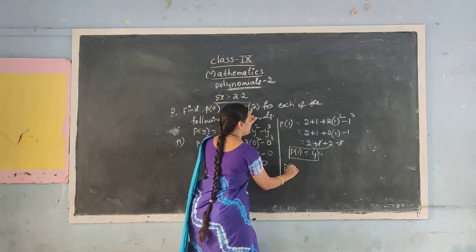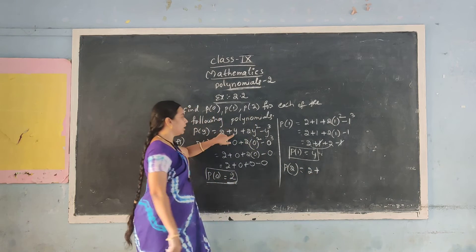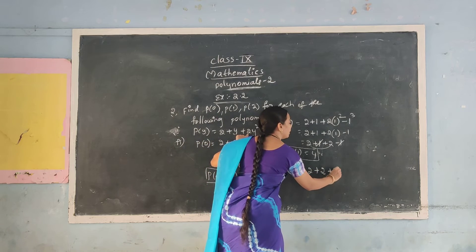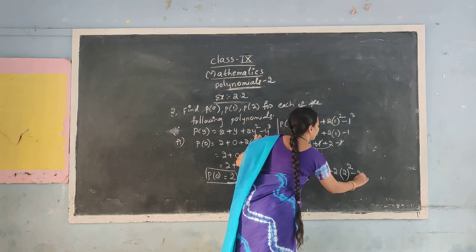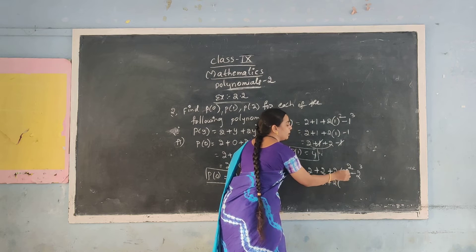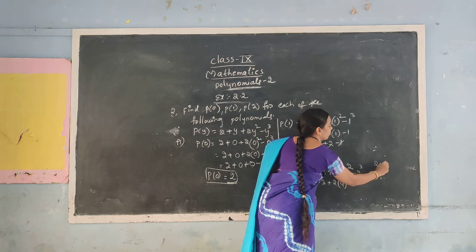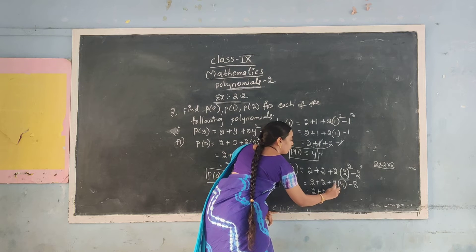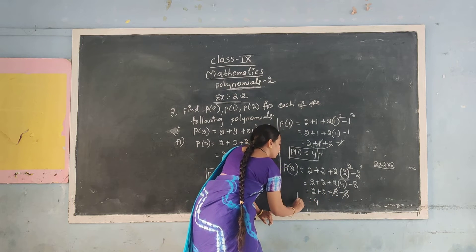Next, P(2): substitute y = 2 in the expression. 2 plus 2 plus 2 into 2 squared minus 2 cubed. First solve the powers: 2 squared = 4, 2 cubed = 8. Remove the bracket and multiply: 2 into 4 = 8, minus 8. Here plus 8 and minus 8 cancel. Remaining: 2 plus 2 = 4. So P(2) = 4.